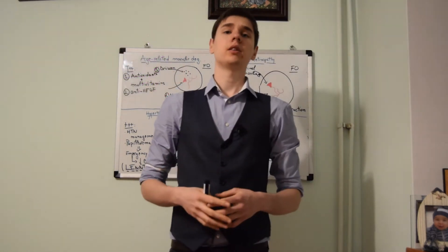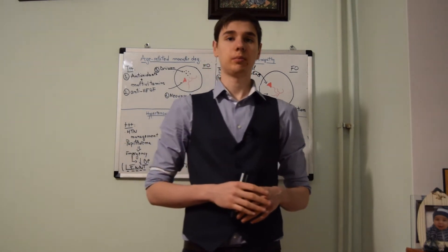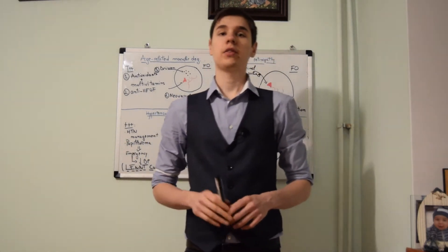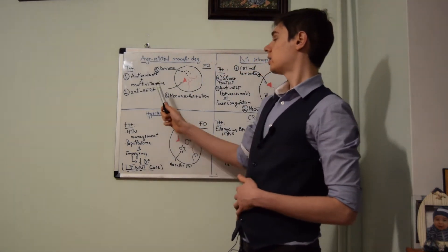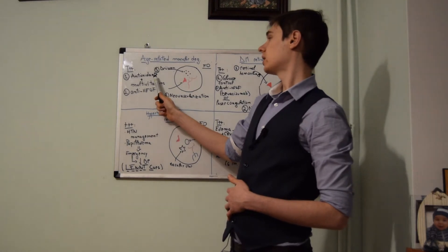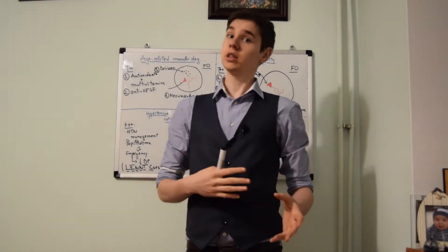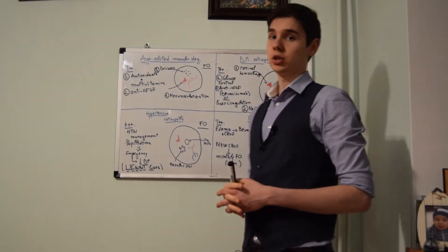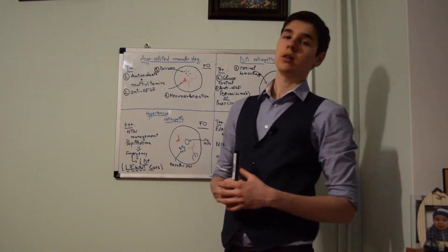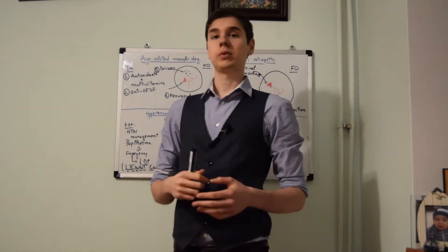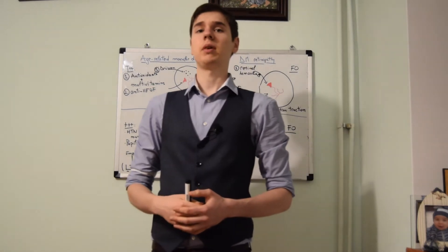On step 2 CK, there will be questions about the best next step in treating the patient. If he has dry macular degeneration, search for an answer that shows he's given antioxidants or multivitamins. On the other hand, if the fundoscopic image shows wet type age-related macular degeneration, then opt for an anti-VEGF. One such example is Bevacizumab.